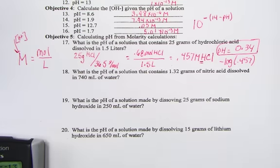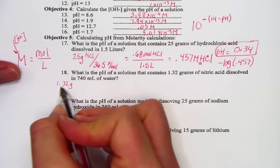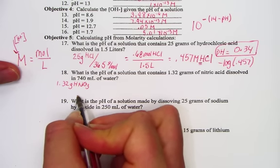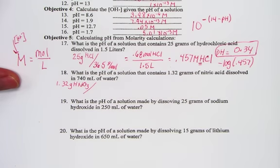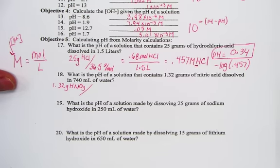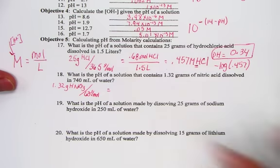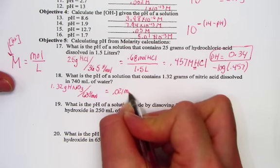Number 18, I believe, is the same because we're given an acid in that solution. If the pH of a solution is determined by putting 1.32 grams of nitric acid, HNO3, into 740 milliliters of water. First thing we'll do is convert our grams into a mole, and I'll do that by adding a molar mass. I get 63 grams per mole, so 1.32 divided by our mole number gives us 0.021 moles of nitric acid.